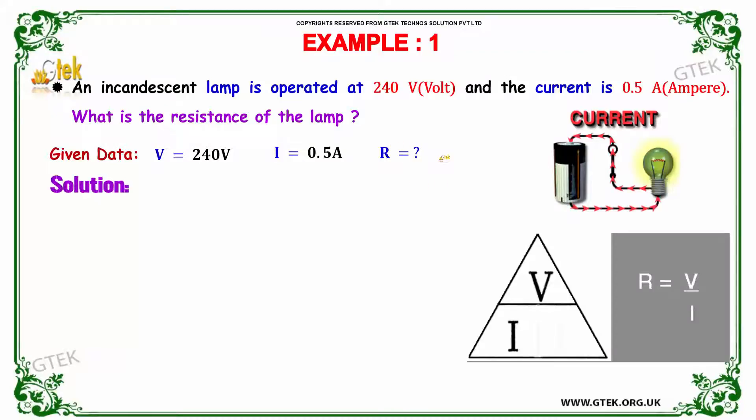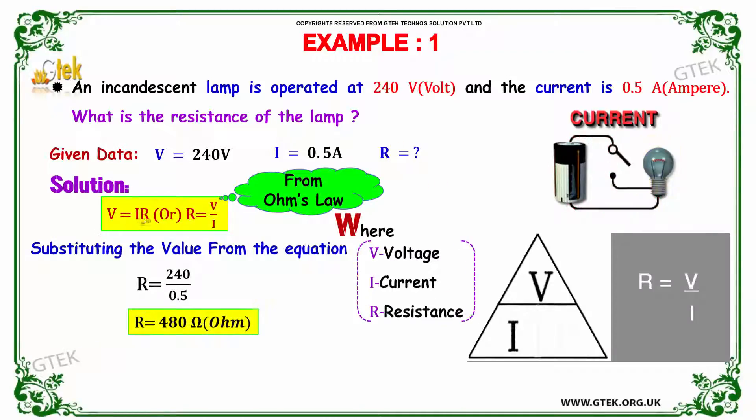So this can be identified using Ohm's law. What is Ohm's law? Ohm's law is nothing but V is equal to I into R, or R is equal to V divided by I. So R is equal to V is 240 divided by 0.5. We got the resistance as 480 ohm.